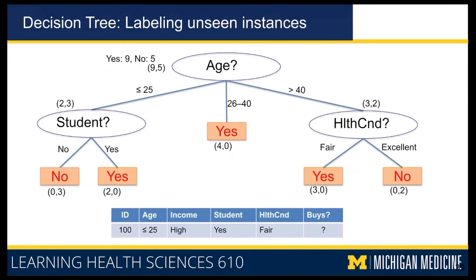Once you have the tree and you see a new instance — age less than 25, income high, student yes, health condition fair — you use the decision tree to classify it. The tree first checks age, which is less than 25, so it goes down the left branch. You don't need income or health condition; you just look at student. Student is yes, so it takes the right branch and reaches the label node yes.